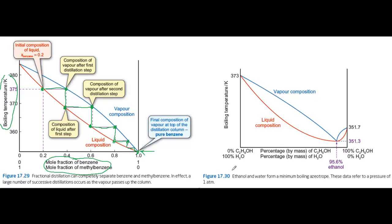There's an example of an azeotropic mixture in figure 17.30. It's the boiling point composition diagram for ethanol and water.